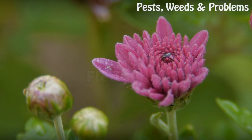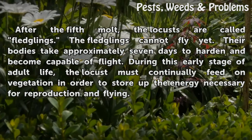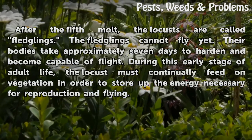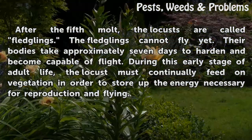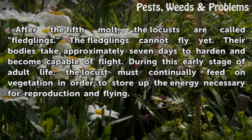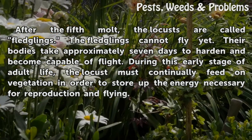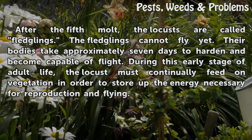Fledglings. After the fifth molt, the locusts are called fledglings. The fledglings cannot fly yet. Their bodies take approximately seven days to harden and become capable of flight. During this early stage of adult life, the locust must continually feed on vegetation in order to store up the energy necessary for reproduction and flying.